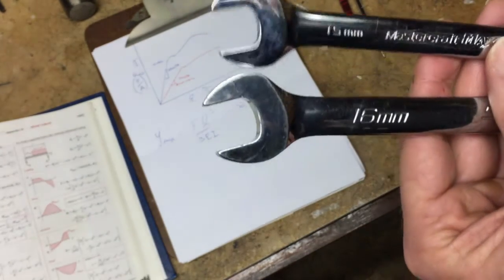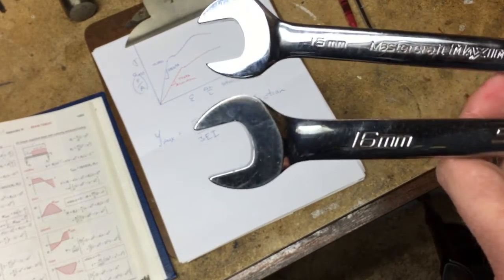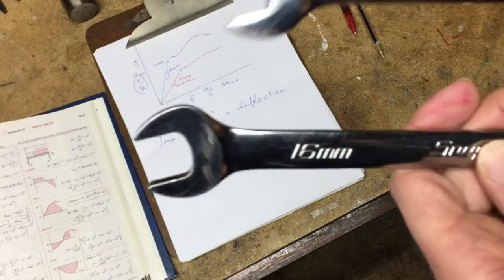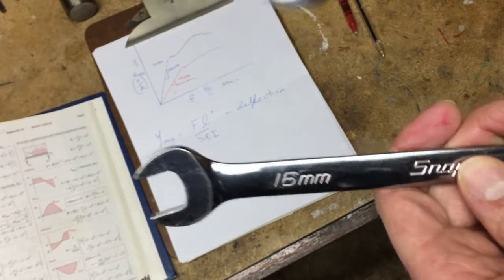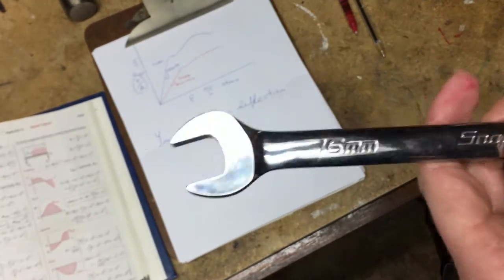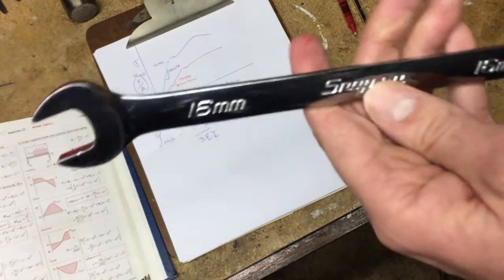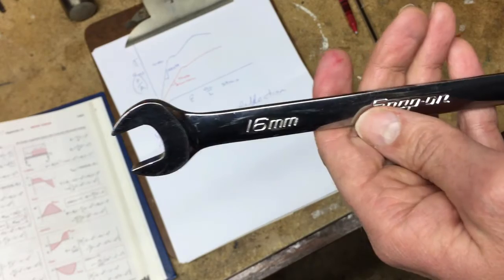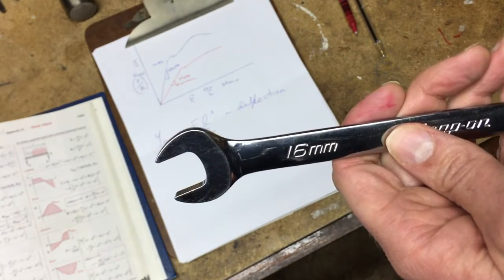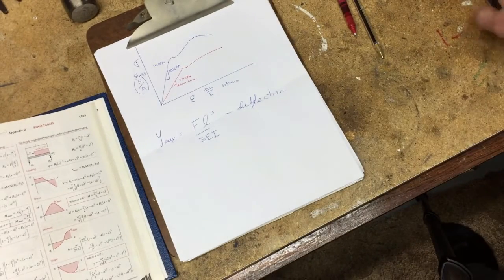So these will deflect the same amount, and I'm going to explain why. I never said they'll break at the same amount of stress, but they will deflect the same amount. Therefore they will perform the same. This is non-flank drive, so this is an older Snap-on. This will open up no more, no less than any other steel forged wrench.